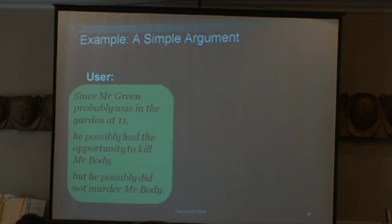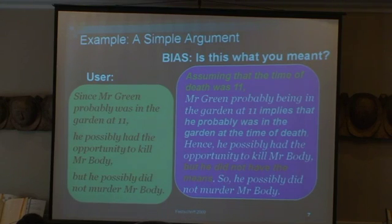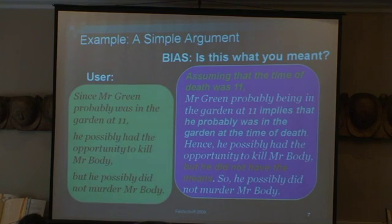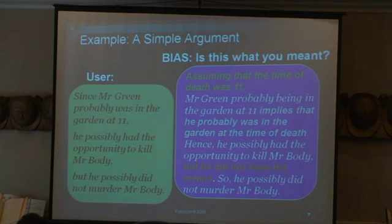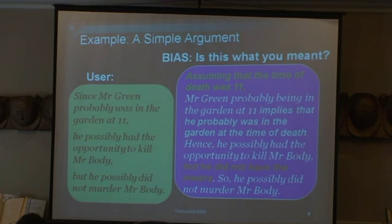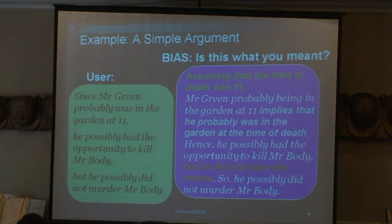The user said that argument. And this is actually what we are able to come up with — you can see the bits that BIAS has filled in shown in a different color. What BIAS is saying is: your argument makes sense to me if I add all these bits. Assuming that the time of death was 11, Mr. Green probably being in the garden at 11 implies he probably was in the garden at the time of death. Hence, he possibly had the opportunity to kill Mr. Boddy, but he did not have the means. So he possibly did not murder Mr. Boddy. Is that close? And you hope the user says yes.